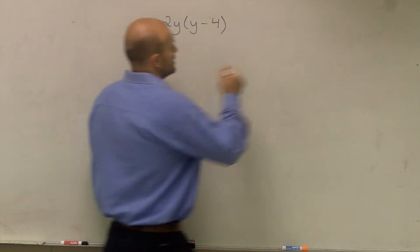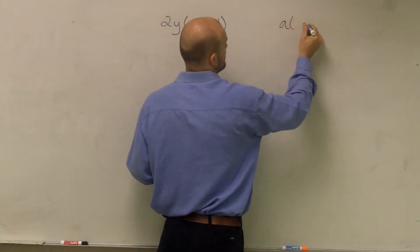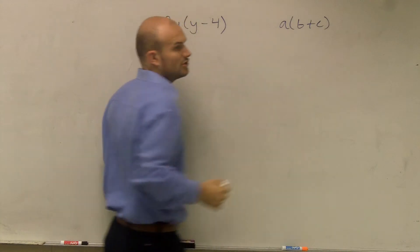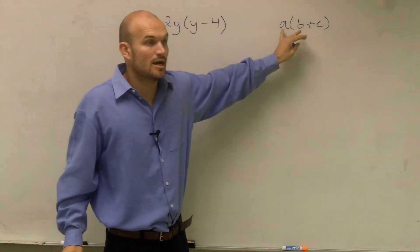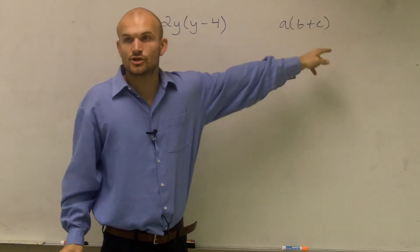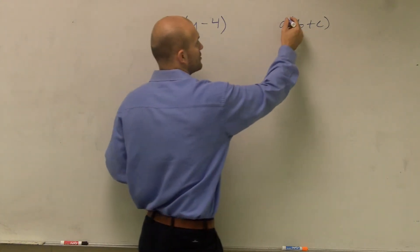And a couple things we need to remember about this. There's a couple of rules. First is your generic rule of distributive property. And what the distributive property states is any time you have a number outside of parentheses, that number needs to be multiplied times every term inside of your parentheses.